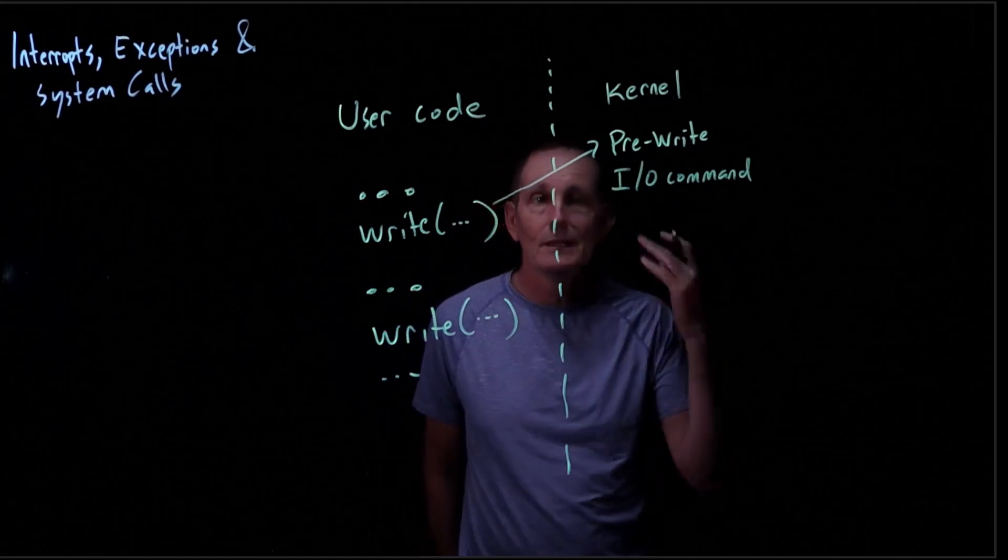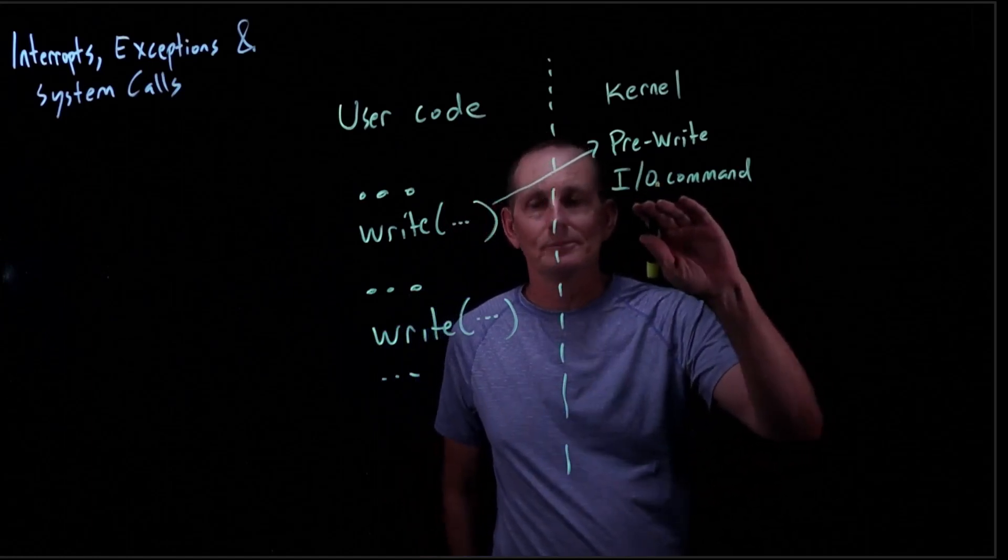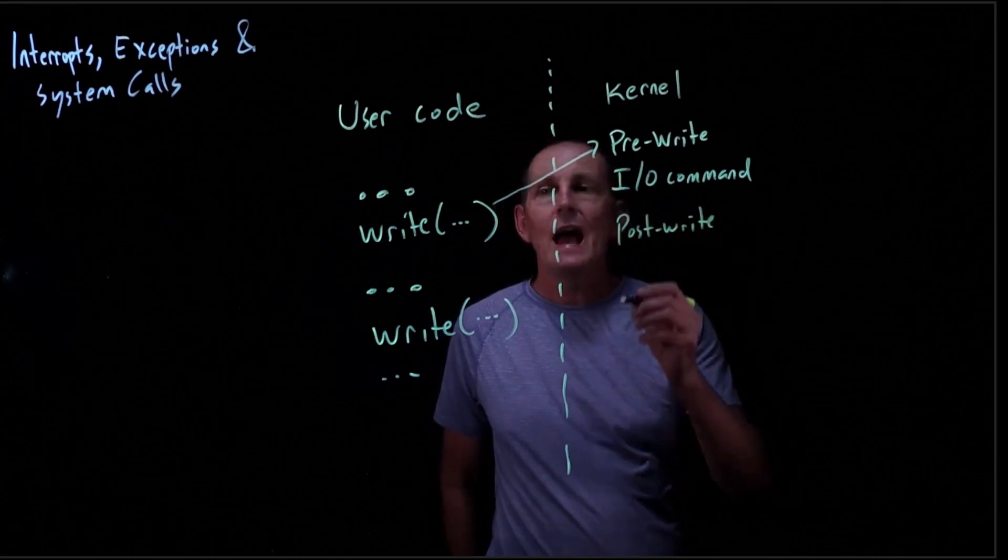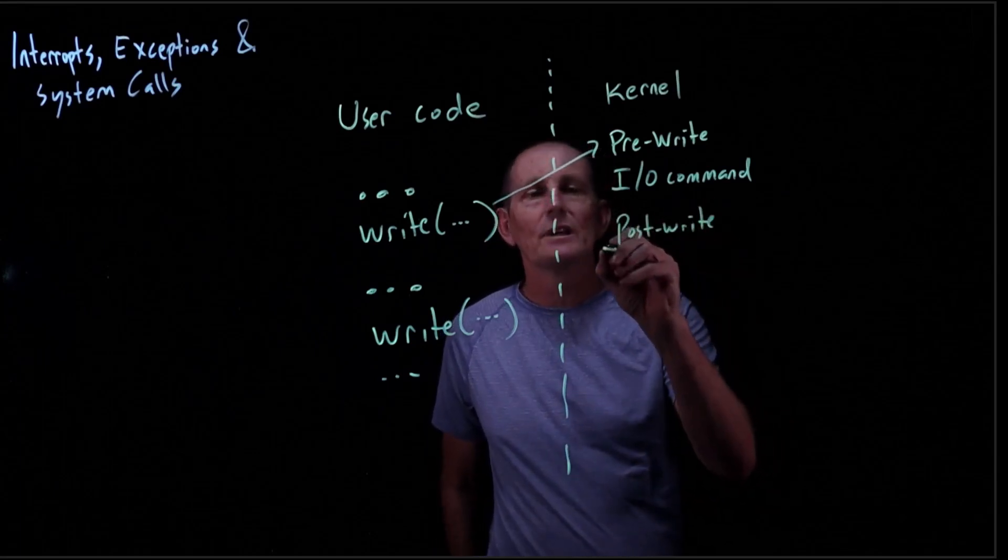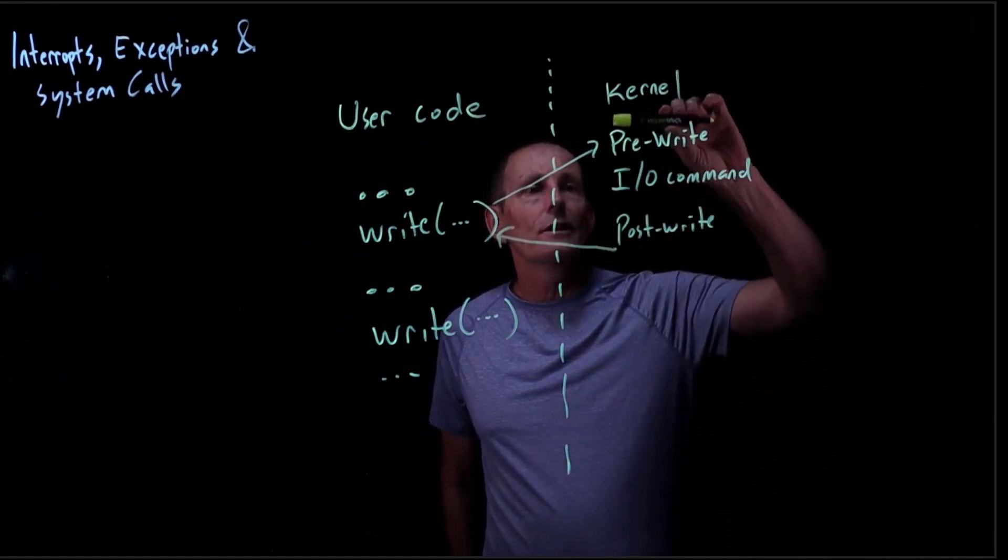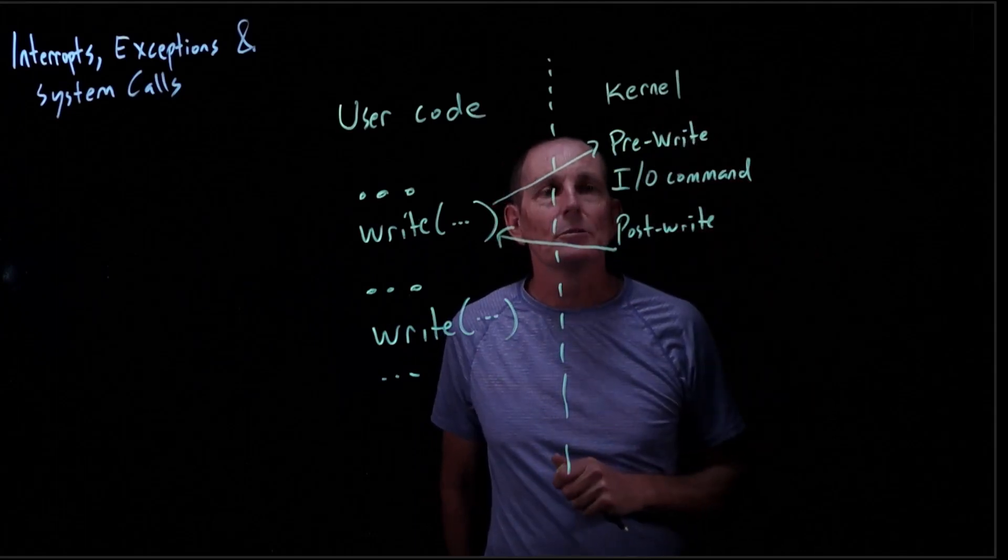The write call goes into the kernel. We'll have some preparation, pre-write code. Then we'll do an I/O command. Now that I/O command is going to do something like write to the disk, so this is going to be slow. Then we have some post-write type stuff. After the post-write happens, we come back to the write.